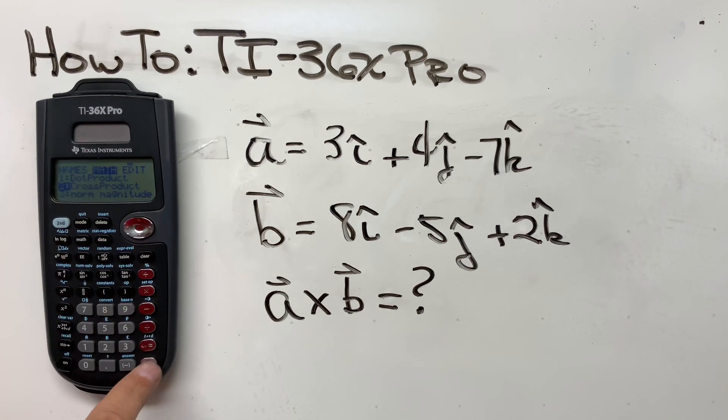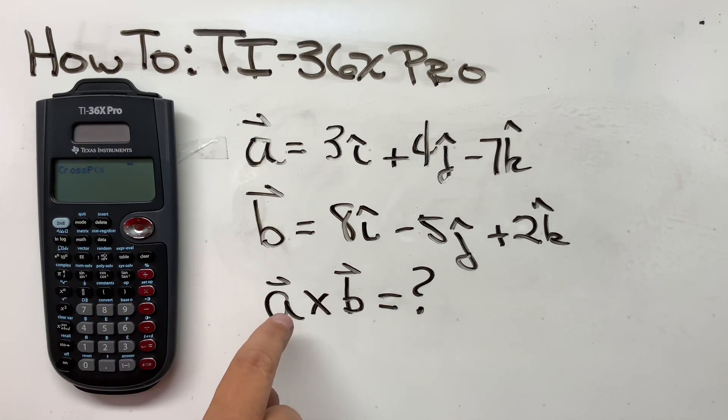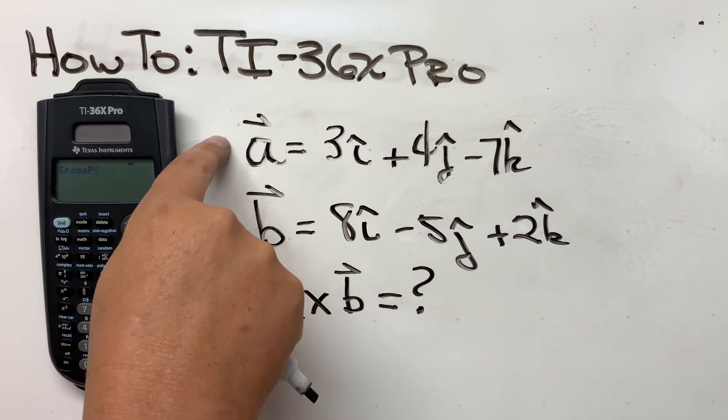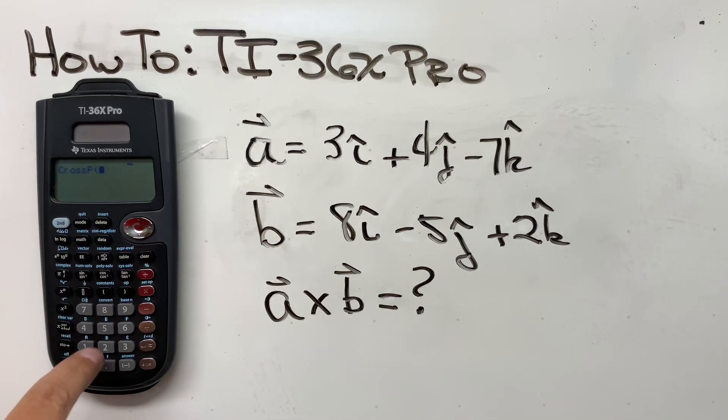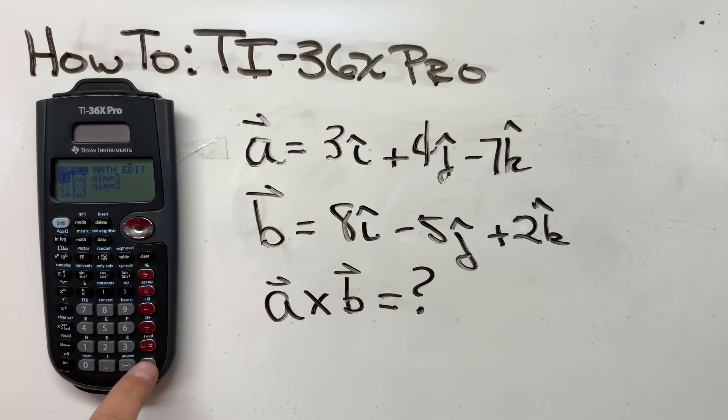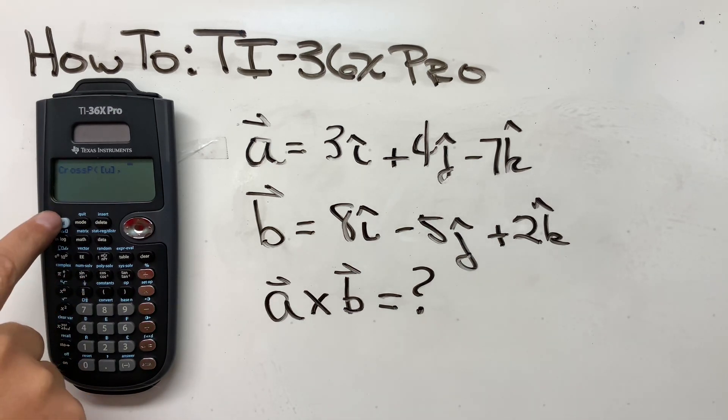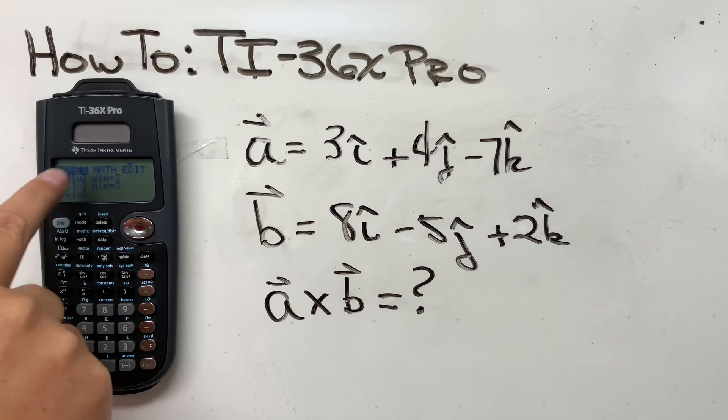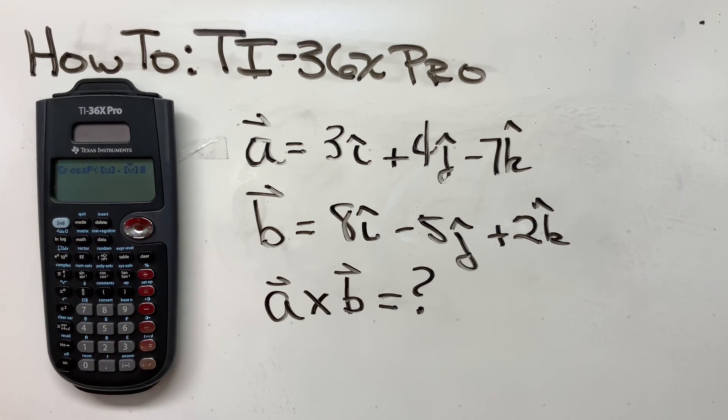So that's number two. Hit enter, and it says cross product of what? Well, we want to do A cross B, or in our case, U cross V. So let's go here to second vector, and let's put in our U. There's our U, enter, and then comma. There's the comma. Now let's put in our V, second vector. Here comes V, enter, and then close parentheses. So cross product of U comma V, and then just hit enter, and there it is.